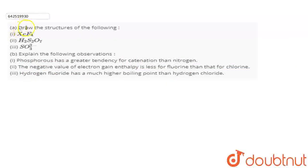Hello everyone, the question is: draw the structures of the following. In this question, three compounds are given which we have to draw their structures: XeF4, H2S2O7 and SO3 2-. In the next part of the question, we have to explain the given observations. There are three observations given that we have to explain. So let's start.